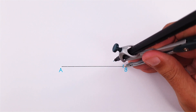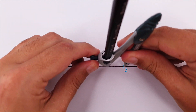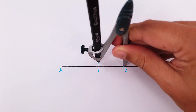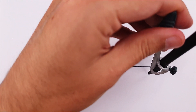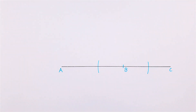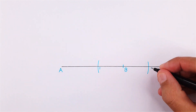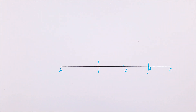Next, place your compass on point B and adjust it to any measurement and draw two arcs that will section line AC on both sides of point B. Label these intersections as point 1 and 2.